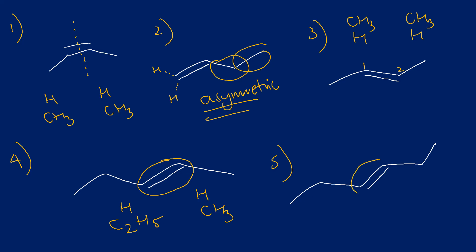Number five: identifying the double bond - on the right hand side I've got a H and a C2H5; on the left hand side I've got a C2H5 and a H. They are identical, so number five would be classed as a symmetric alkene.